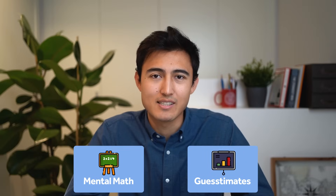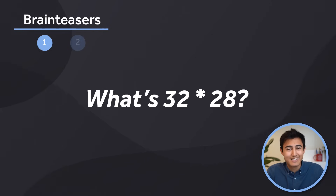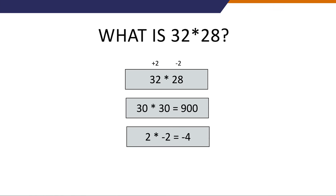Next up: brain teasers, split into mental math and guesstimates. For mental math, consider a question like 32 times 28. You might not know it off the top of your head, but notice a pattern: both numbers are only two away from 30. So do 30 times 30, which is 900. You went plus 2 and minus 2, and multiplying those differences gives minus 4. So 900 minus 4 equals 896. The same trick applies to numbers that are three or four away from a round number.